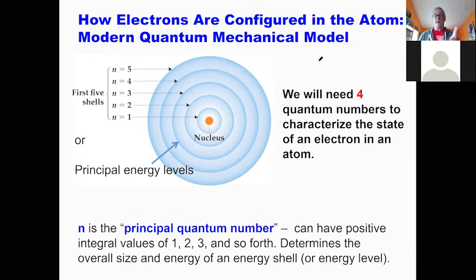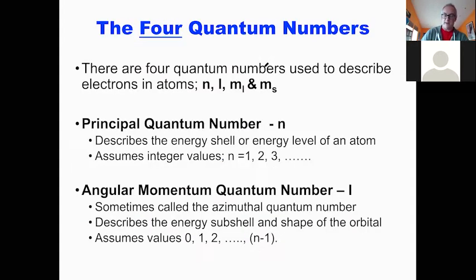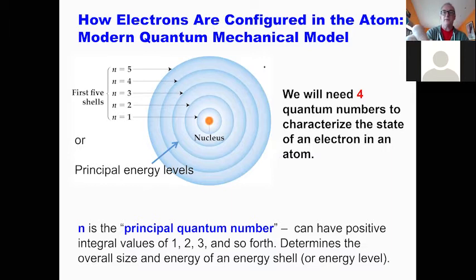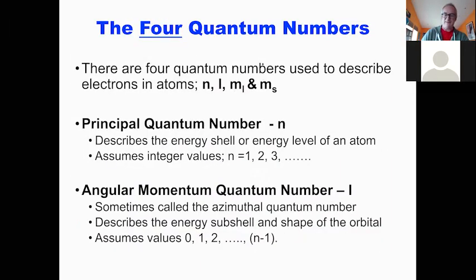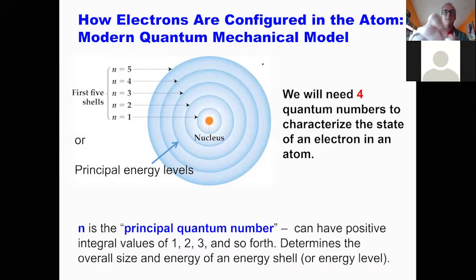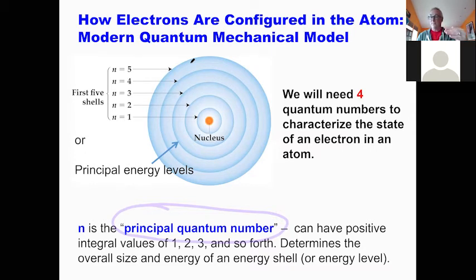Those are pretty straightforward. We call that N, or the principal quantum number. N is the same as the shell — how far away is the electron from the nucleus? We call that a shell or an energy level; those terms are interchangeable.